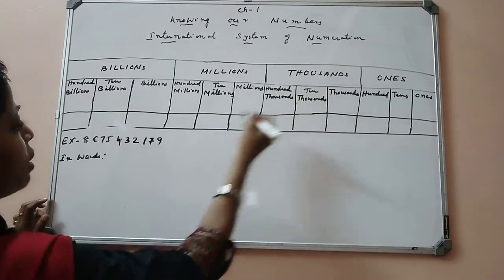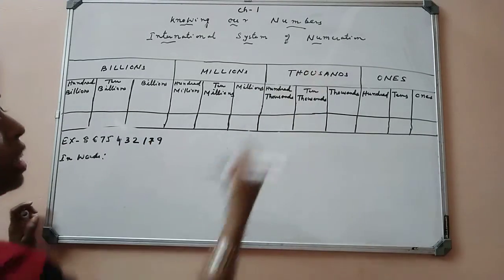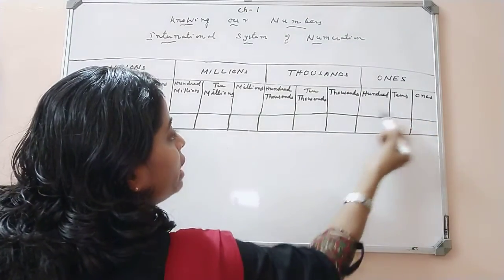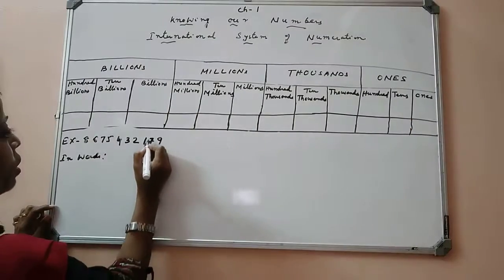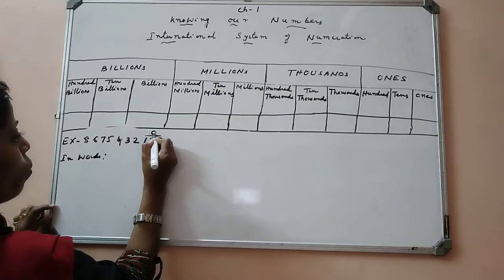Like when we start from the right hand side, we have first ones period, and ones period consists of three places. So, one, two, three. This belongs to ones period.